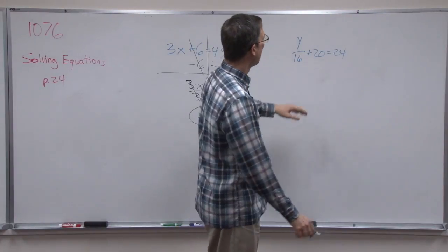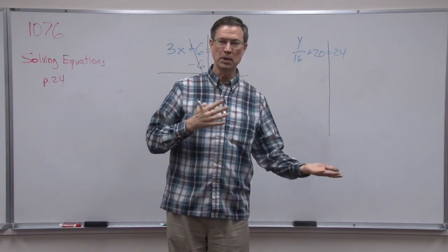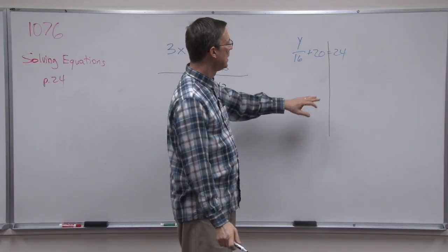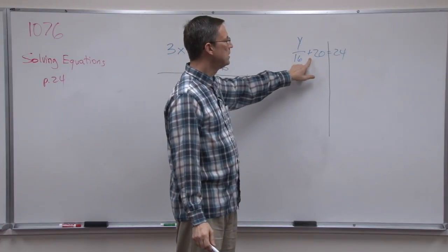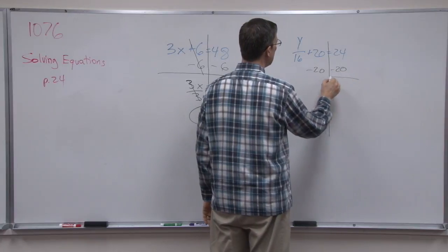Let's look at this one here now. Again, I'm going to draw a line through the equals because I want to keep the two sides balanced, okay? I'm going to undo addition. So I'm going to subtract 20 from both sides.